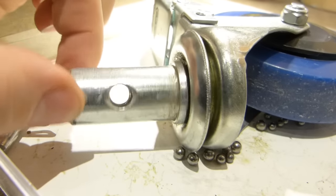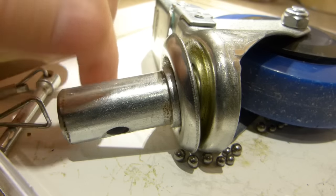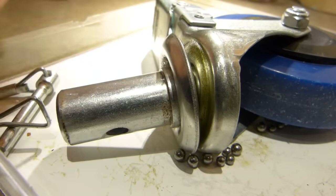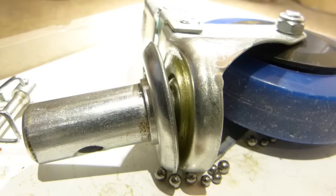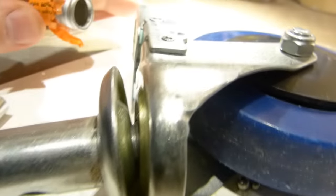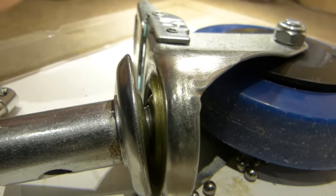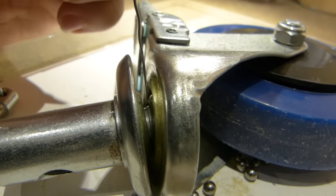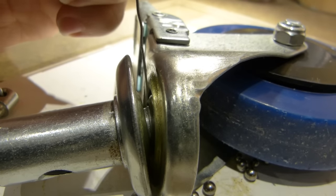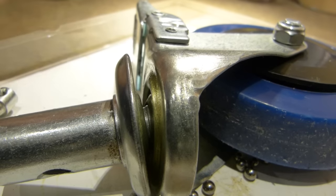This part of the dowel is 22 millimeters, or 7 eighths of an inch in diameter. That's how thick it is. But at the neck, where it got bent, as you can see right about there, it's only 12 and a half millimeters, half an inch.